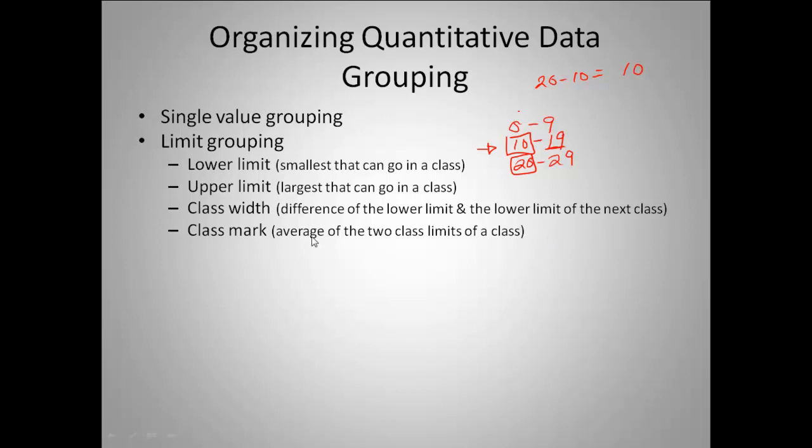The class mark is the average of the two class limits of a class. So my class mark for my 0 to 9, I would find the mean of those, the average. So I would do 0 plus 9 divided by 2, which would be 4.5.